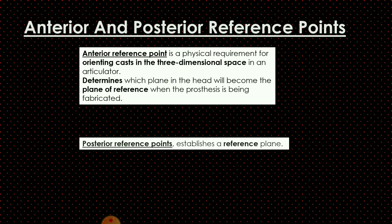Now, regarding anterior and posterior reference points: the anterior reference point is a physical requirement for orienting a cast in three-dimensional space in an articulator. It also determines which plane in the head will become the plane of reference when the prosthesis is being fabricated. While recording in the patient we have landmarks we can palpate on the face, but when transferring this relation to an articulator we need reference points to simulate those landmarks on the articulator.